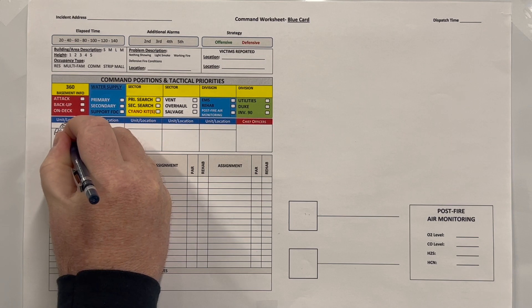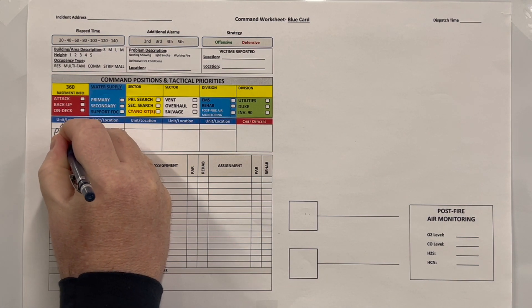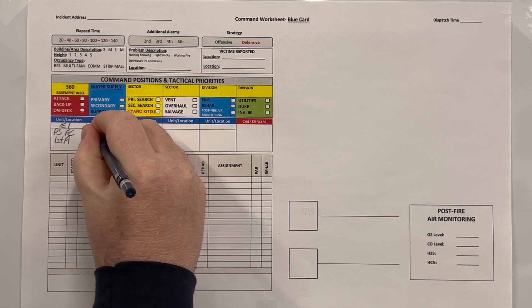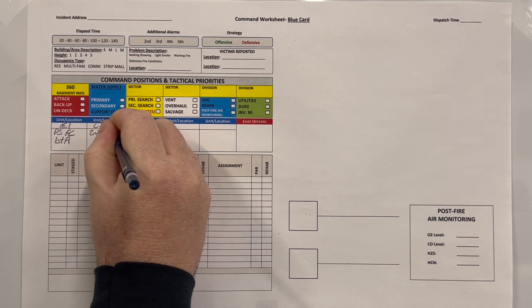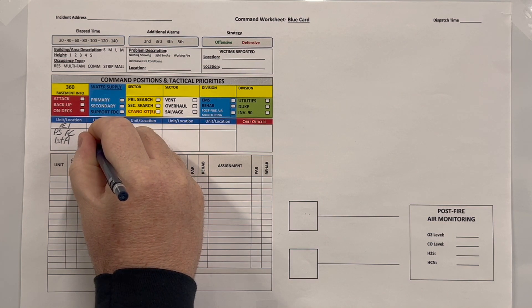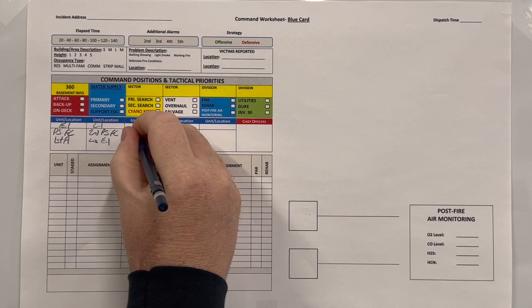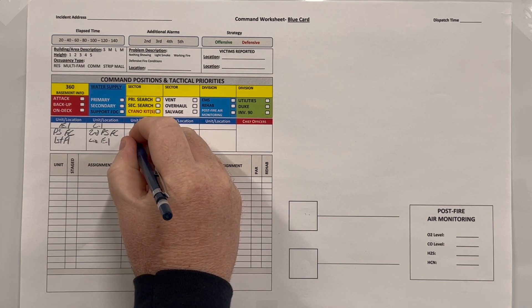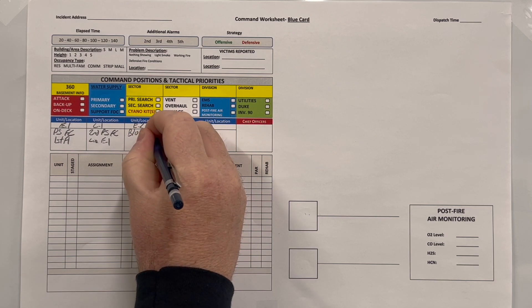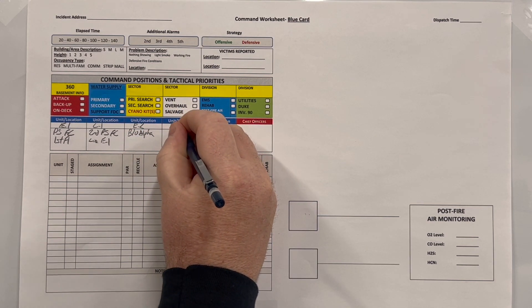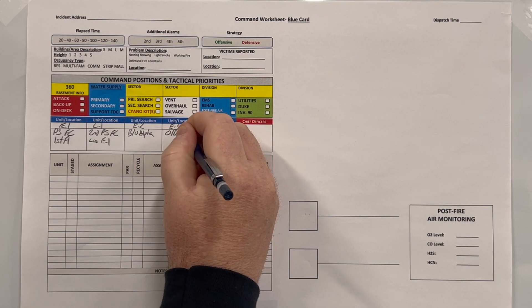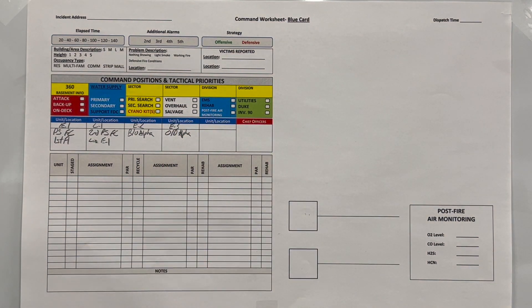I go to the first box and write: Engine 1 — primary search, fire control, first floor. Ladder 1 — second floor, primary search, fire control, with a line off Engine 1. Engine 2 — picked up their own water supply and pulled a backup line to the Alpha side. Engine 3 — assigned on deck, Alpha side. At that point I key up the radio and call Engine 1, the mobile IC, and prepare for the command transfer.